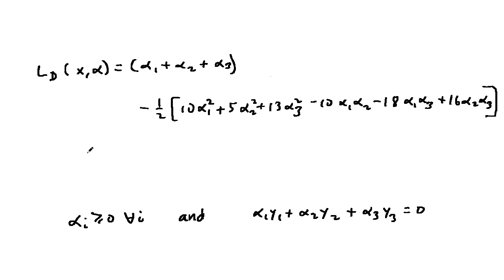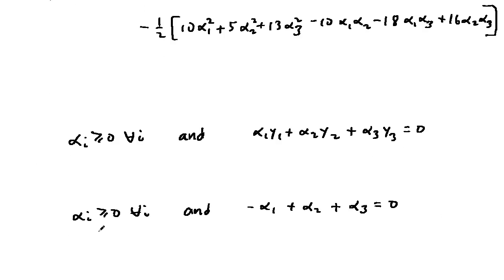We want to maximize L sub d subject to the constraints alpha i is greater than or equal to 0 for all i, and alpha1 y1 plus alpha2 y2 plus alpha3 y3 equals 0. That is, we need alpha i greater than or equal to 0 for all i, and negative alpha1 plus alpha2 plus alpha3 equals 0.